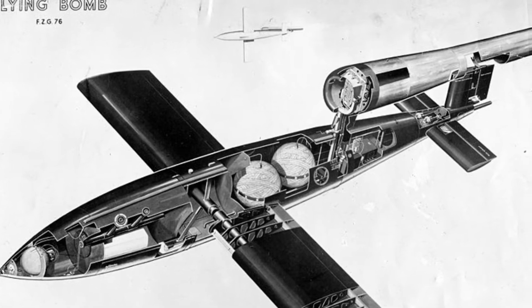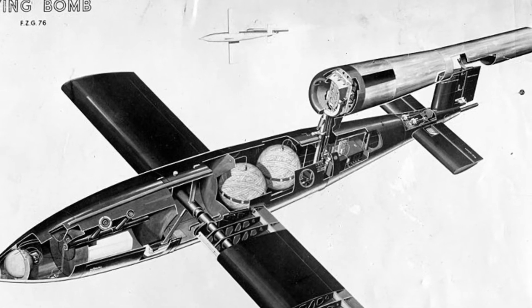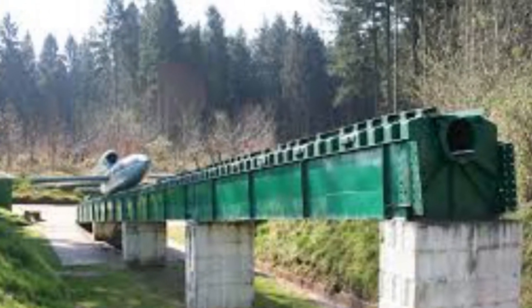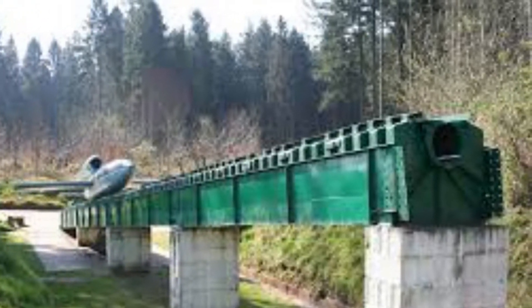Here is a picture of the inside of a V-1 rocket. And here now is a picture of a V-1 rocket launch site and the typical rails used to launch such rockets.